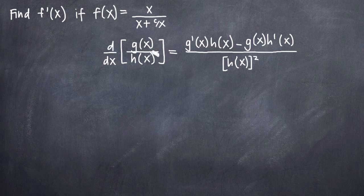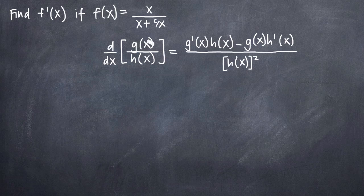if we want to take the derivative of that fraction, here's the formula we'll use. We have g prime of x, which is the derivative of the numerator. The numerator is g(x), and g prime of x is its derivative. We have h(x), our original denominator, minus g(x), which is our original numerator, times h prime of x, which is the derivative of our denominator. So we need to identify both the original numerator and denominator as well as the derivative of both so we can plug those pieces into our formula.